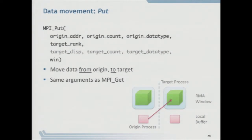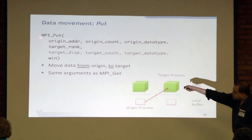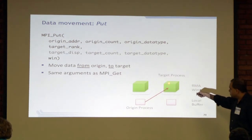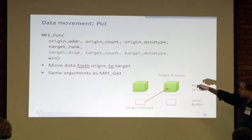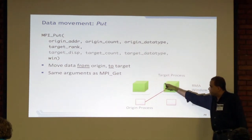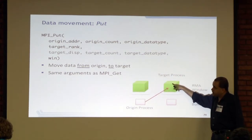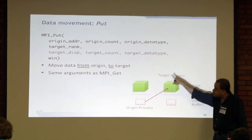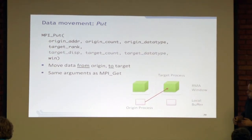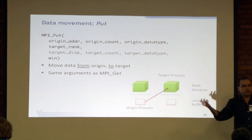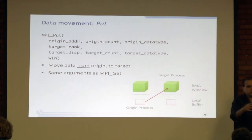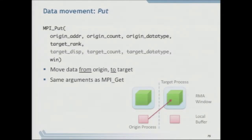For MPI_Put, it's the reverse direction. The first three parameters refer to the data in your buffer you want to put somewhere — the origin address, count, and data type. The target rank is the rank of the target process. The same target displacement, count, and data type apply as in Get. The displacement starts from the base of the target's window. The data types on origin and target sides can be different but must be compatible — for example, a contiguous set of integers on one side and a vector of integers on the other is fine, but integers on one side and floating point on the other is an error. Again, this is a non-blocking put.